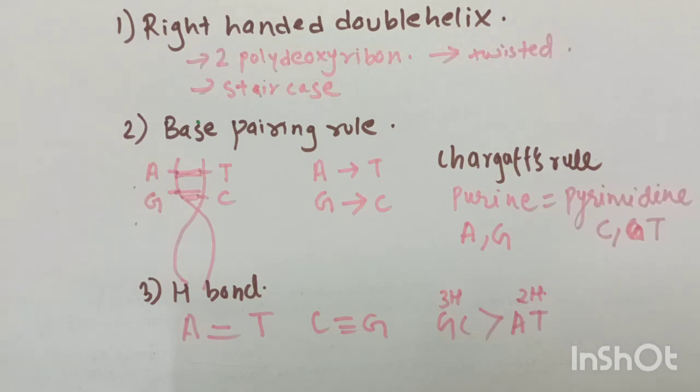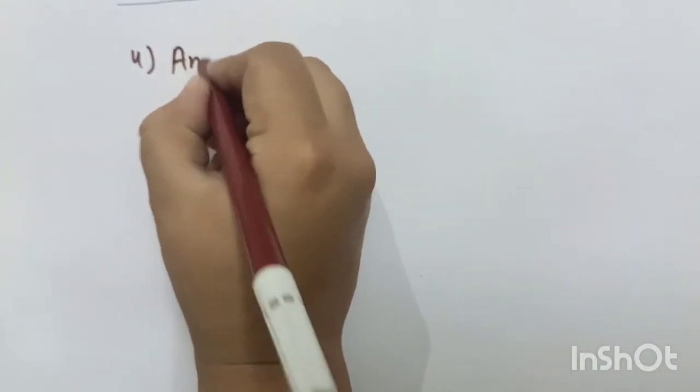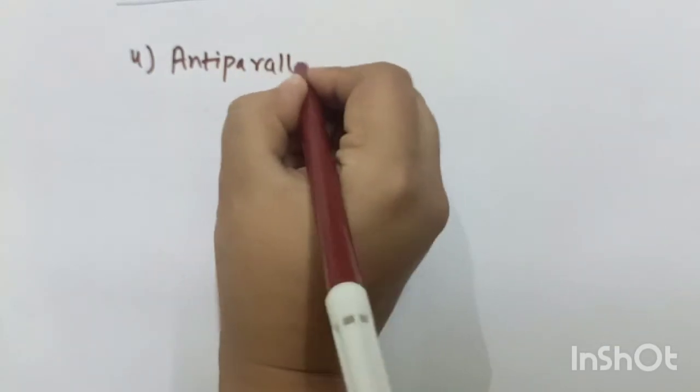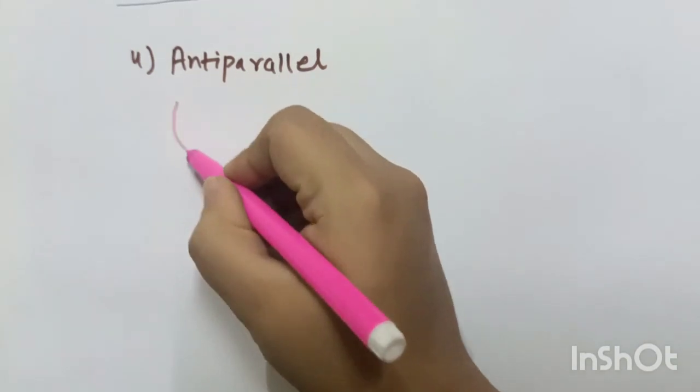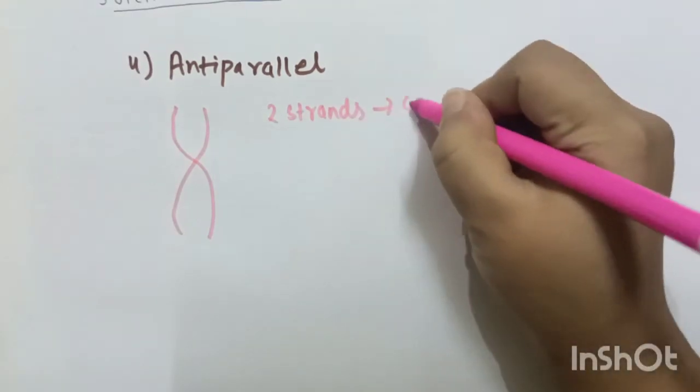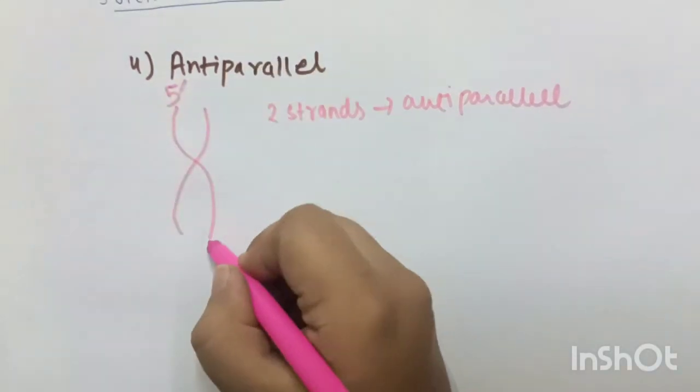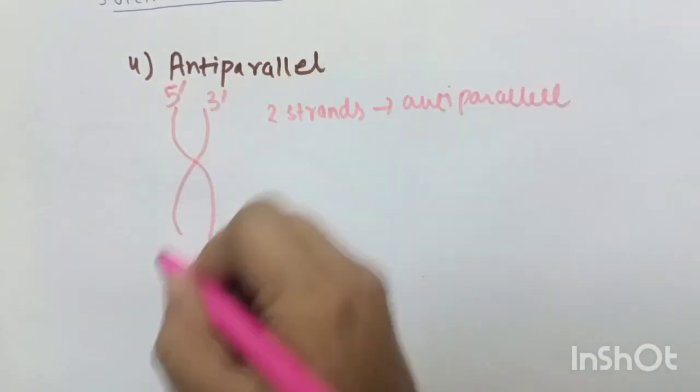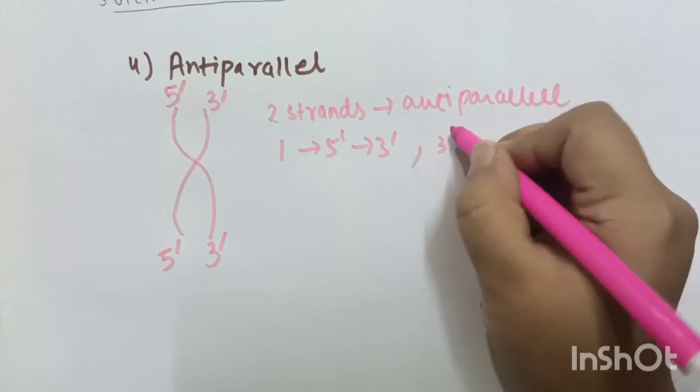Number 4, anti-parallel. The 2 strands run anti-parallel to each other in a DNA molecule. That means, if one runs from 5' to 3', the other runs from 3' to 5'.